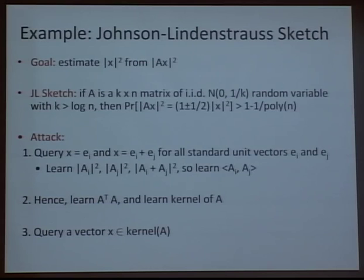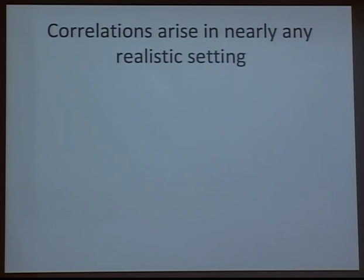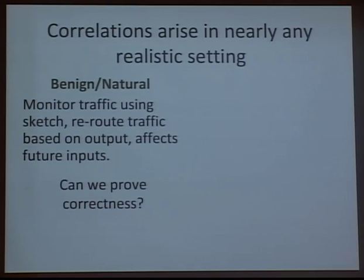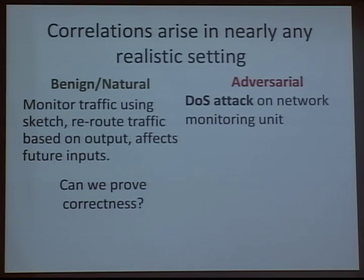Correlations arise in nearly any realistic setting. In the natural or harmless model, say you're using a network traffic monitor with a sketch and deciding where to send traffic based on the sketch output — that traffic might become a future input. The robustness question is: can we prove correctness on this distribution? But there's also a much more adversarial example, like a denial-of-service attack on the network, where someone actively tries to reroute packets by looking at the sketch output. Here the robustness question is: can we thwart the attack?